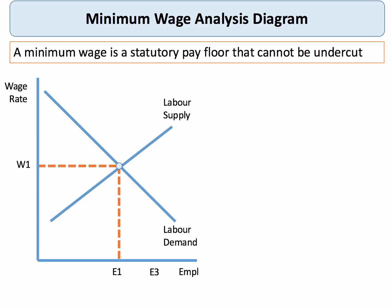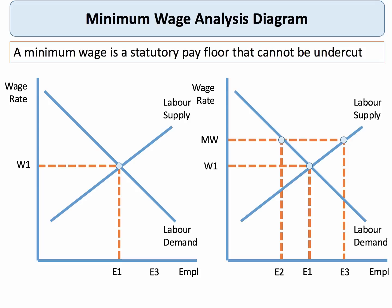So let's go through the basic analysis. The core diagram is going to be a labour market diagram with the wage on the y-axis and the employment of labour on the x-axis. We assume here we have a free market wage W1 with employment level of E1. If we now impose a minimum wage — I'll take you over to the right-hand side of my diagram — the key point is that a minimum wage is a pay floor, and for it to have any effect on the market, it must be set above the normal prevailing wage for a particular occupation.